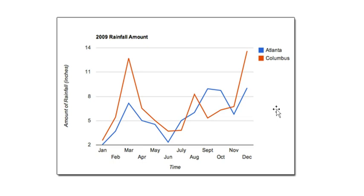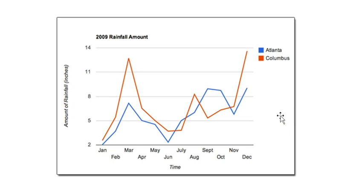One specific question that could be asked is: how many inches did it rain in Columbus in May? Columbus is the red line, so we come to May, go up, and it's approximately five and a half inches. Similarly, the amount it rained in Atlanta in May is about 4.5 inches.